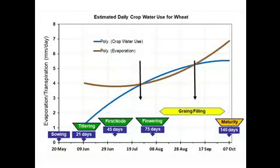Coming back to this 21-day period — this is a very critical time in wheat because at 21 days you begin to tiller, and if your soil is dry at this point, the tillering will be impacted; it won't tiller as well as you would want. So if your crop is anywhere around that 21-day mark, please ensure that the top of your soil is moist. Irrigate at 21 days to stimulate tillering. It's also an ideal time to put your first top dressing on and to deal with your weeds.